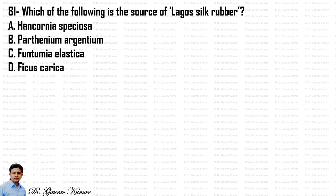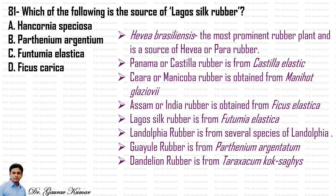Which of the following is the source of Lagos silk rubber? Hevea brasiliensis is the most prominent rubber plant and is a source of Hevea or Para rubber. Panama or Castilla rubber is from Castilla elastica. Assam or India rubber is from Ficus elastica. The Lagos silk rubber is from Funtumia elastica. Landolfia rubber is from several species of Landolfia. Guayule rubber is from Parthenium argentatum, and dandelion rubber is from Taraxacum kok-saghyz. So the answer is C, Funtumia elastica.